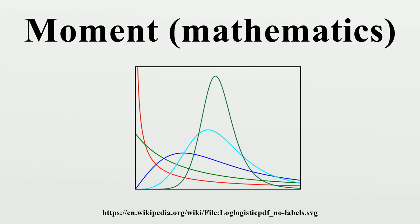For distributions that are not too different from the normal distribution, the median will be somewhere near mu minus gamma sigma over 6. The mode about mu minus gamma sigma over 2.